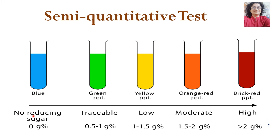A blue color indicates no reducing sugar is present. A green precipitate means a traceable amount of sugar is present — 0.5 to 1 gram percent. A yellow precipitate means the sugar concentration is 1 to 1.5 grams percent. An orange to red precipitate indicates a moderately high amount of reducing sugar — 1.5 to 2 gram percent. A brick red precipitate means more than 2 gram percent, which is considered a very high amount of glucose in the urine.